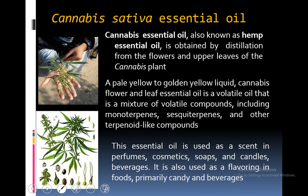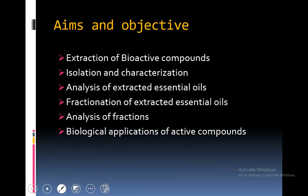Cannabis sativa essential oil, also known as hemp oil, is obtained by distillation from flowers and upper leaves of the Cannabis sativa plant. Its essential oil is a pale yellow or golden yellow liquid — a volatile oil that is a mixture of volatile compounds including monoterpenes, sesquiterpenes and other terpenoid-like compounds. This essential oil is also used as scent in perfumes, cosmetics, soaps, candles, beverages, and as flavouring in foods, primarily in candies and beverages. The aims and objectives of this research were: extraction of bioactive compounds, isolation and characterization, analysis of essential oils, fractionation and analysis of fractions, and biological applications of separated bioactive compounds.